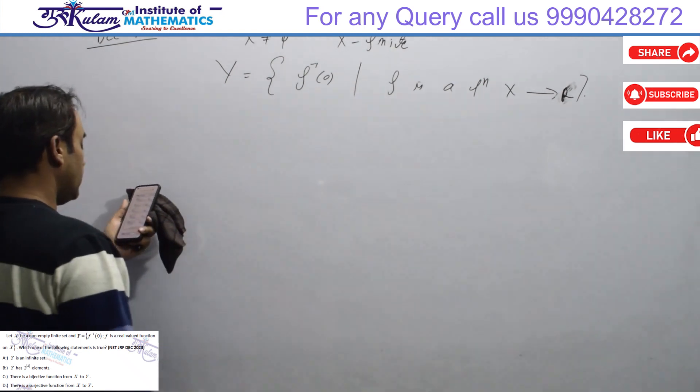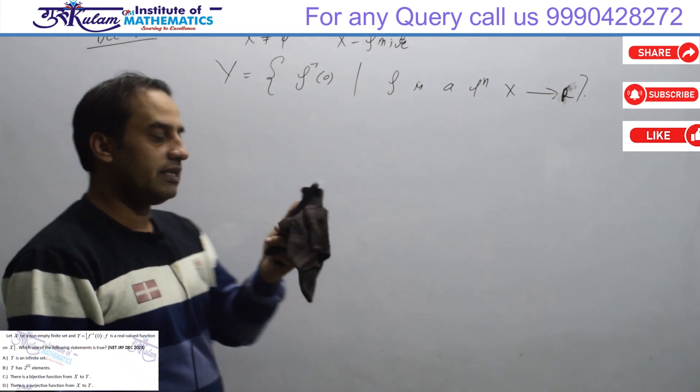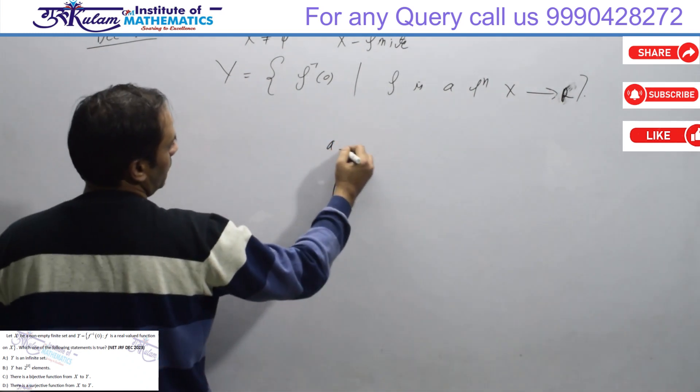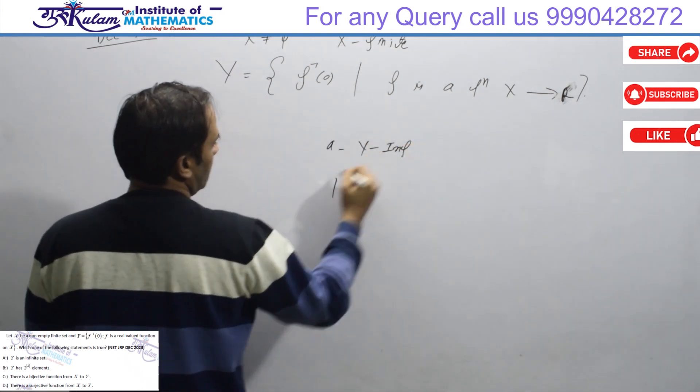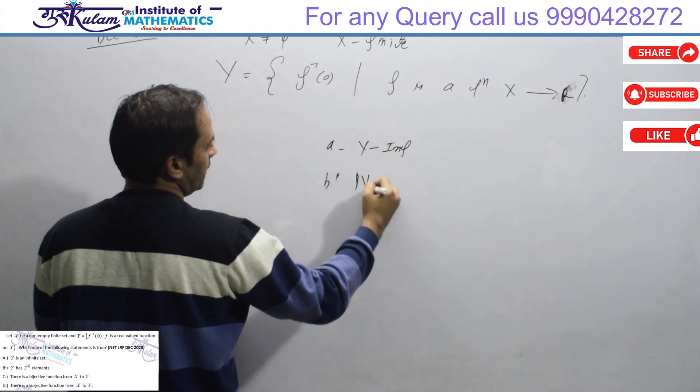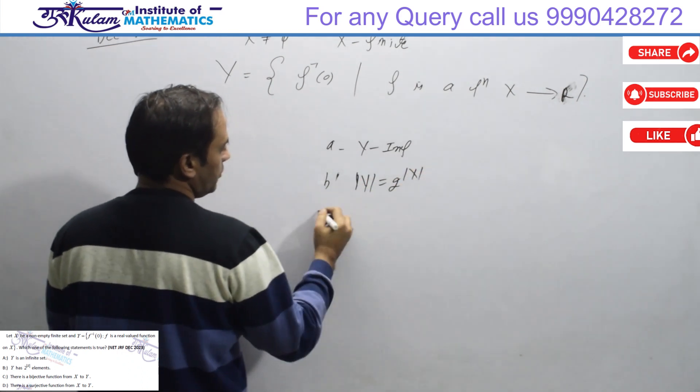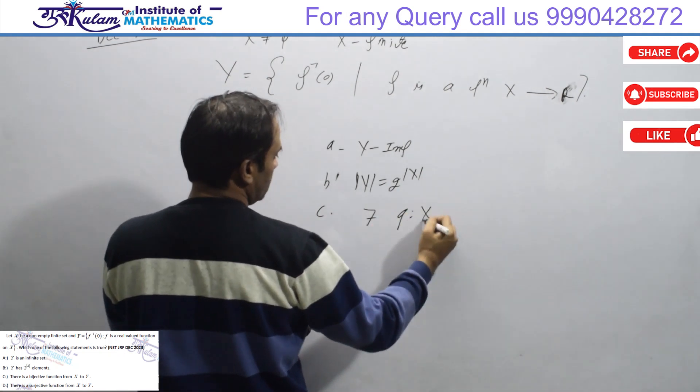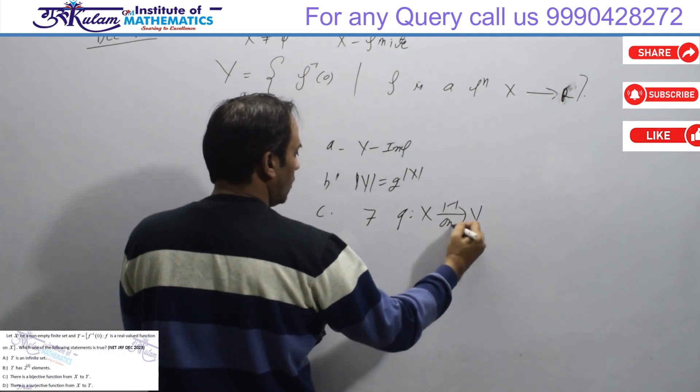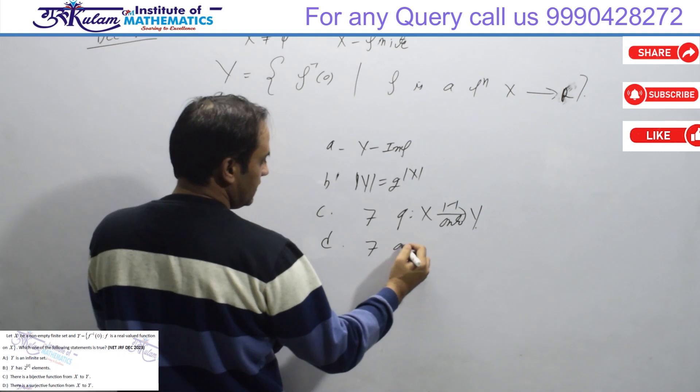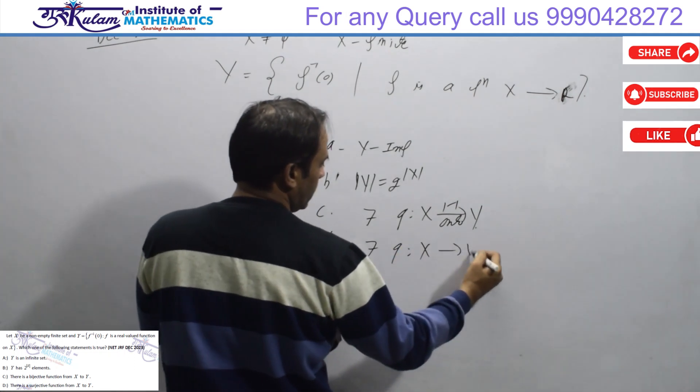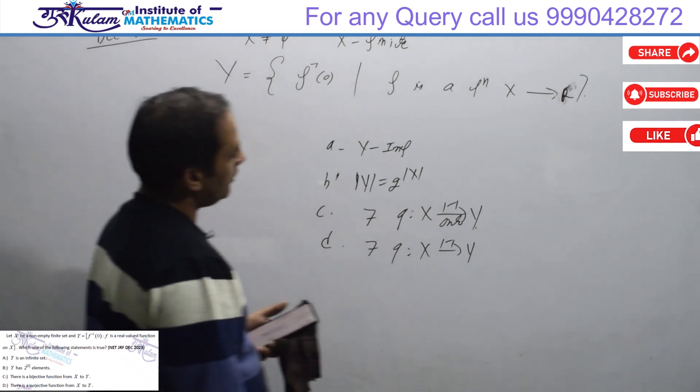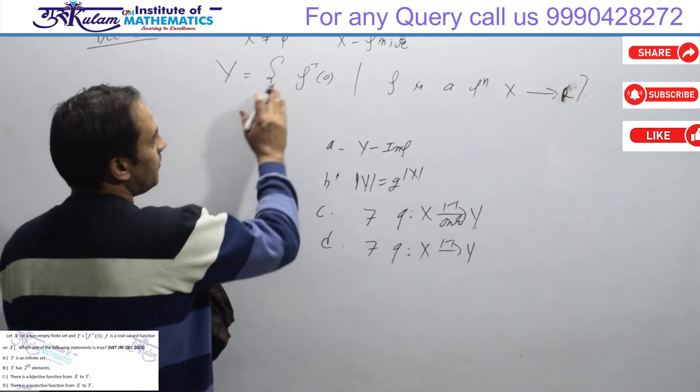Option A: Y is infinite. Option B: Y equals 2 to the power X. Option C: There exists a bijection between X to Y, one-one and onto function. Option D: There exists g which is X to Y, one-one function. So here in the options you can discuss the question meaning.